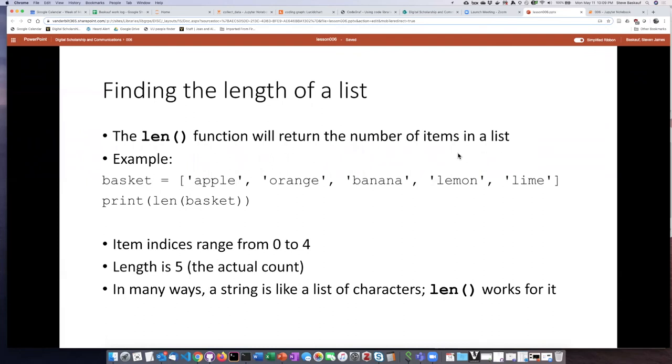If we want to find the number of items on a list, we can use the length function or len. It will return the number of items of the list that we insert into it as its argument. So for example, if I create this list here and call it basket and then ask Python to print the length of the basket, the indices of the items on the list will be zero, one, two, three, and four. But the length of the list is five because the length function returns the actual number of items on the list, not the number of the highest index on the list.